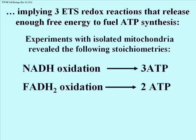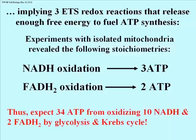Indeed, the stoichiometries of ATP synthesis coupled to NADH or FADH2 oxidation were worked out. NADH oxidation seemed coupled to the synthesis of three ATPs, while FADH2 oxidation fueled only two ATP syntheses. Based on the amount of these electron carriers produced in the electron transport system, one could predict that the free energy from glycolysis and the Krebs cycle could fuel the synthesis of 34 ATPs.